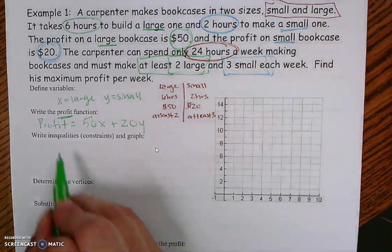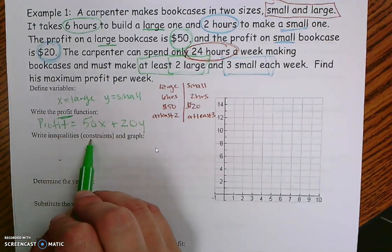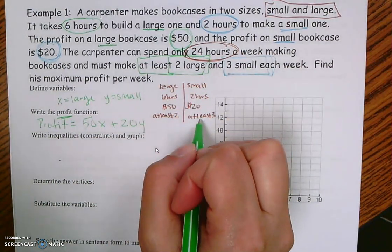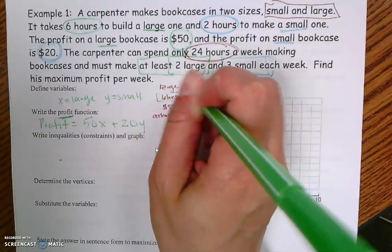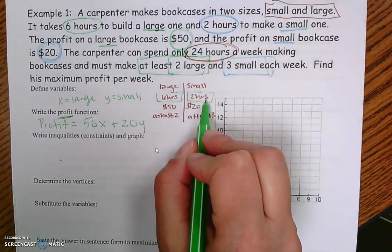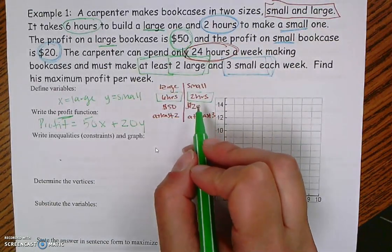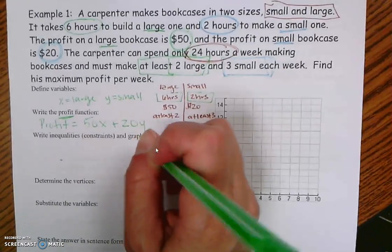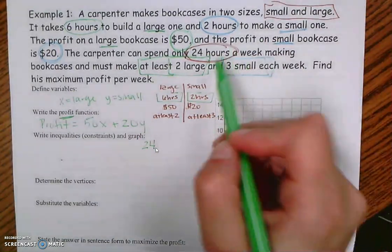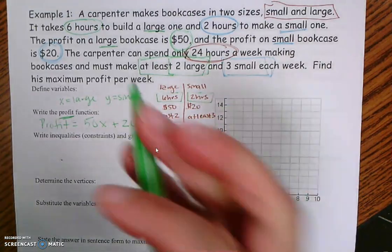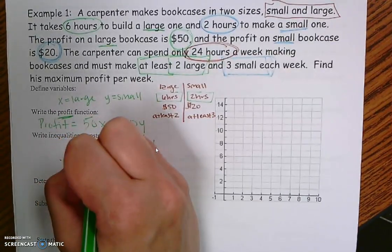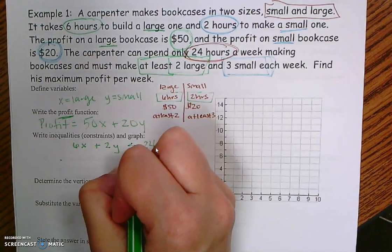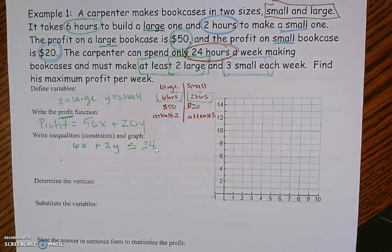Inequalities are constraints — restrictions. I need to create inequalities that describe my situation. The first thing I look at is what goes together: I have six hours and two hours, and hours goes with hours. If I'm trying to find an inequality, there's always one that has to do with a total. My 24 hours is a total, so some inequality must involve 24 hours. So: six times large plus two times small has to be less than or equal to 24. That is my first inequality.